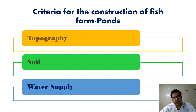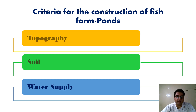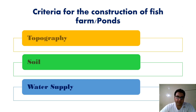The main considerations before the selection of a site for the construction of a fish pond are mostly three: the first one is topography, the second one is soil, and the third one is the supply of water.